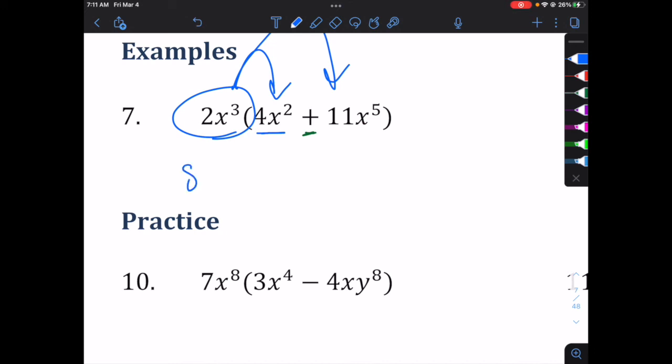Coefficients. 2 times 4, 8. Now we multiply x to the third times x to the second. We add those exponents. x to the fifth.